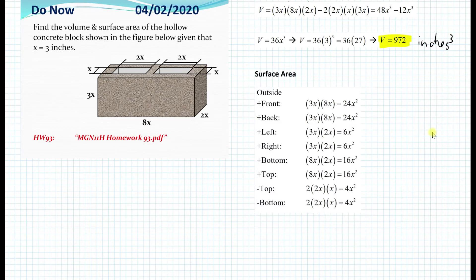So the outside part consists of the front part, which is just 3x times 8x equal to 24x squared. Then the back part, which is also the same, 24x squared. Now the left part consists of 3x, which is the height of the block, times 2x, which is the depth. So the left and the right part are the same, which are 6x squared.